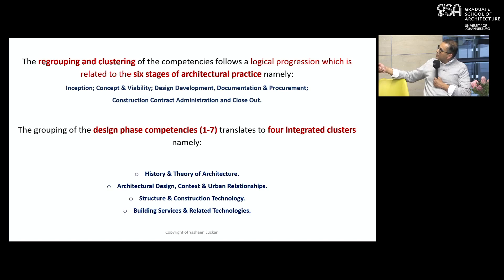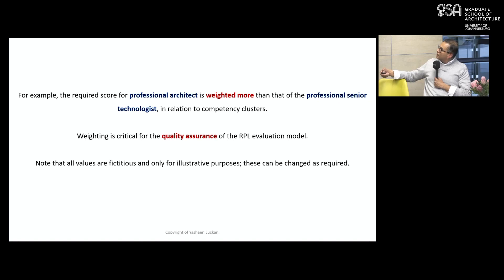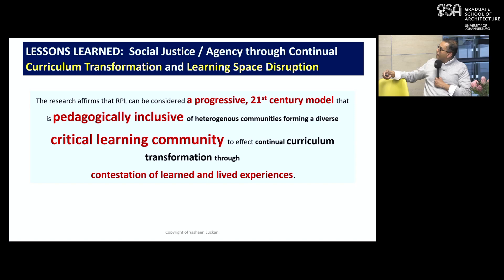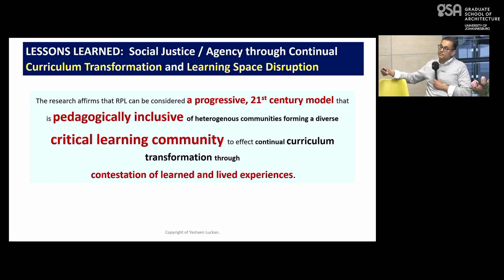The lessons learned from my research — having developed this model and critically self-reflecting and even critiquing the model I developed — is that social justice or agency through continual curriculum transformation and learning space disruption is possible through alternative learning pathways. It brings in other communities of learners, not just the mainstream cohort of students leaving school and articulating through the formal system.